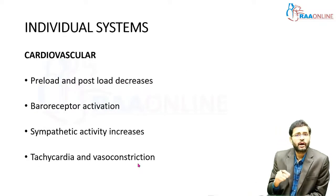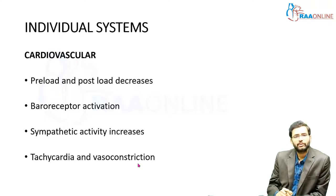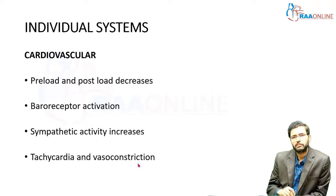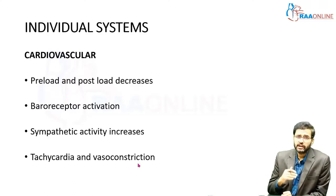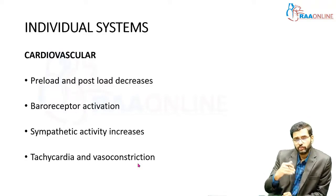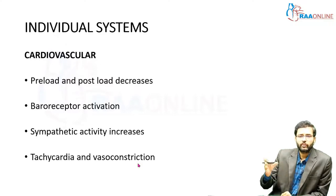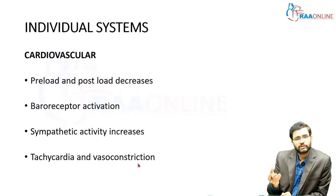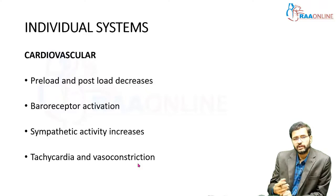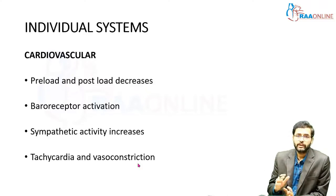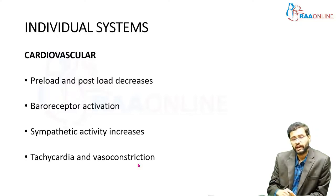How does shock affect individual organ systems? Different systems in the body respond in different ways. Regarding the cardiovascular system, two important terms are preload — the amount of blood reaching the heart — and postload — the amount of blood going out of the heart. In shock, there is a decrease in both preload and postload, and the intravascular volume decreases. When intravascular volume is low, baroreceptors located at the carotid body and the arch of the aorta get stimulated, resulting in sympathetic activity mediated mainly by catecholamines, causing tachycardia and vasoconstriction.